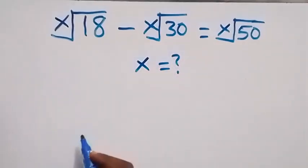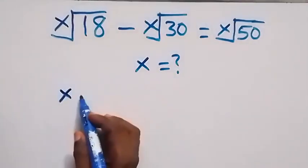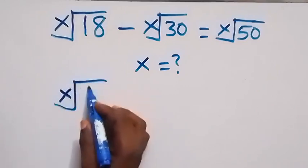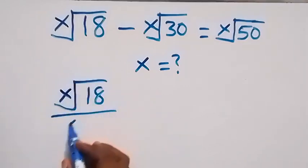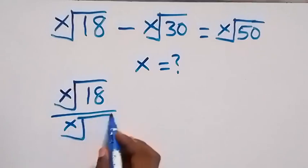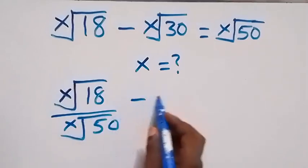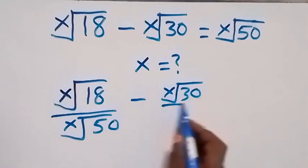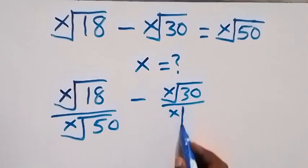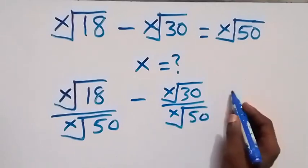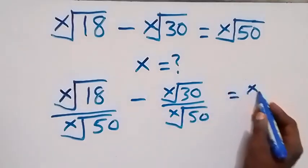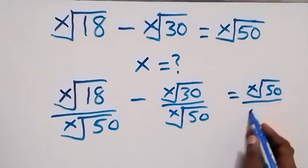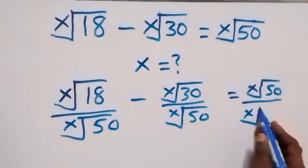From here we can divide through by x root of 50. So we have x root of 18 divided by x root of 50, then minus x root of 30 divided by x root of 50, and on this side we have x root of 50 divided by x root of 50.